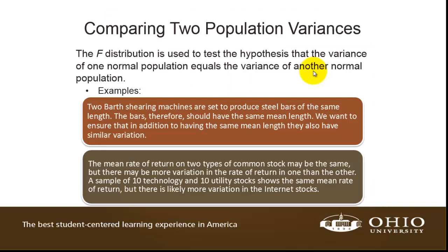Here are a couple of situations where we might be interested in comparing population variances. In the first case, we have two different shearing machines that cut bars to the same length. We're not interested in testing whether the lengths are the same — what we want to know is whether the variation in the lengths of the cuts is about the same. In the second example, we look at two different types of common stock and we're looking at the variation in the rate of return. In other words, are the two stocks equally predictable? Is the variation the same in the two different rates of return?